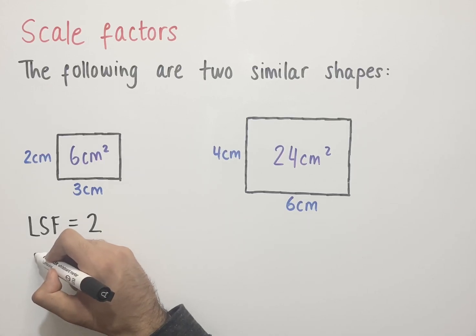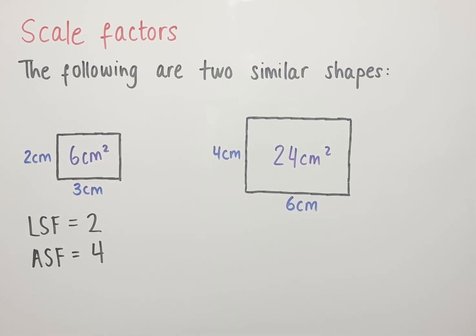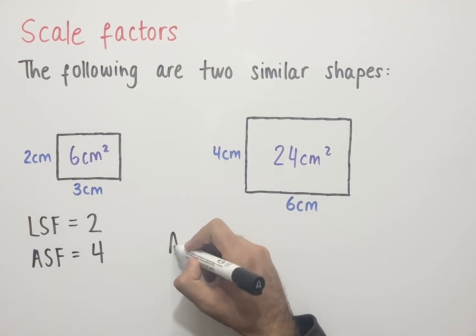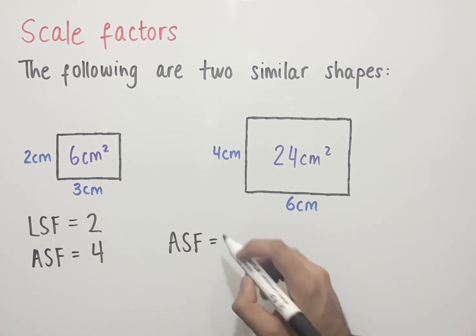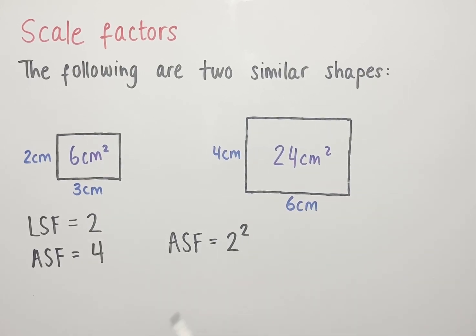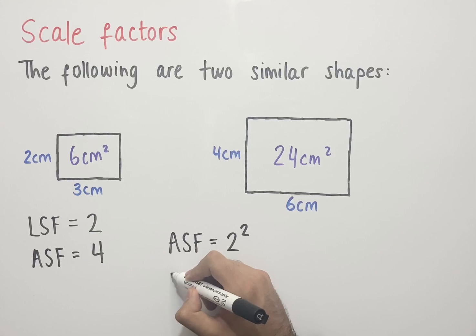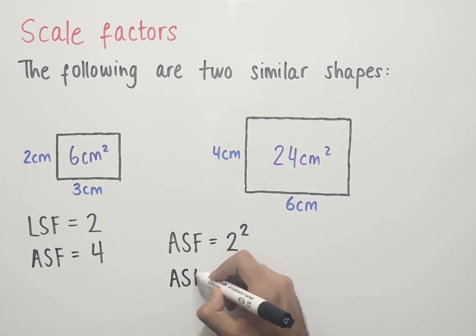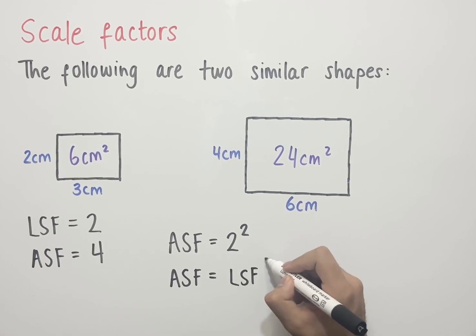So the area scale factor, or ASF, is equal to 4. You might be wondering — these two numbers are related, is there a relationship? Yes, there is. The area scale factor equals 4, and 4 can be written as a power of 2: it is 2 squared. Since 2 is the length scale factor, we can replace it with LSF. So the relationship is: the area scale factor equals the length scale factor squared, or ASF = LSF².